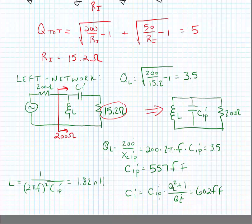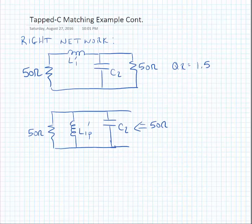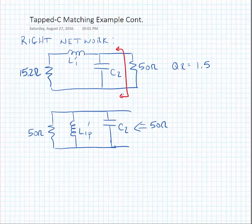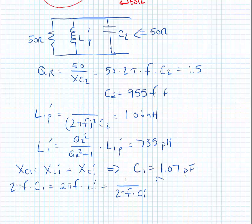The inductor is found using the resonance formula and equals 1.82 nanohenries. For the right side network, starting at 15.2 ohms and going to 50 ohms, we transform L1 and the 15.2 ohm resistor into an equivalent parallel circuit. After working through the algebra, we find the equivalent capacitance is 1.07 picofarads and the equivalent inductance is 735 picohenries. With all component values determined, we can combine them into a single tapped C match.